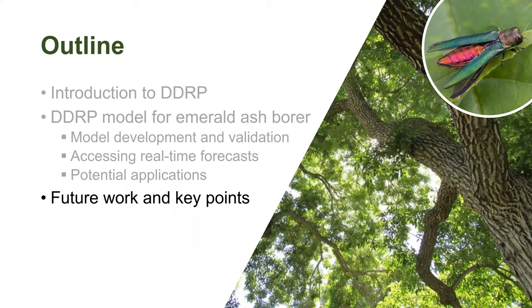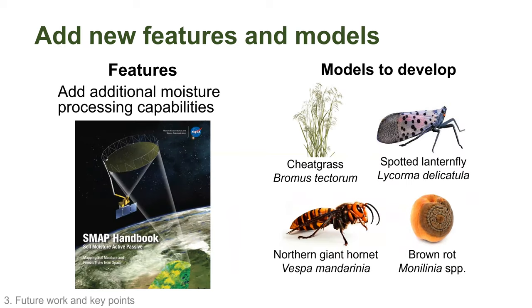For future work, we want to add additional moisture processing capabilities — specifically incorporating SMAP (Soil Moisture Active Passive) satellite data from NASA to better model species like invasive plants, which are sensitive to soil moisture. This will help with climate suitability modeling and phenology of certain plant species and fungal pathogens. We plan to develop models for cheatgrass (Bromus tectorum), spotted lanternfly, Northern giant hornet, and three Monilinia fungal pathogen species that cause brown rot disease, which is highly destructive to stone fruits such as nectarines, peaches, and cherries.